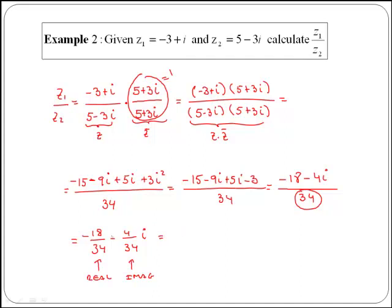However, in this case, we can simplify it a bit further. If we divide by 2, in the first case, we have minus 9 over 17. And if we do the same for the second fraction, we have minus 2 over 17i.